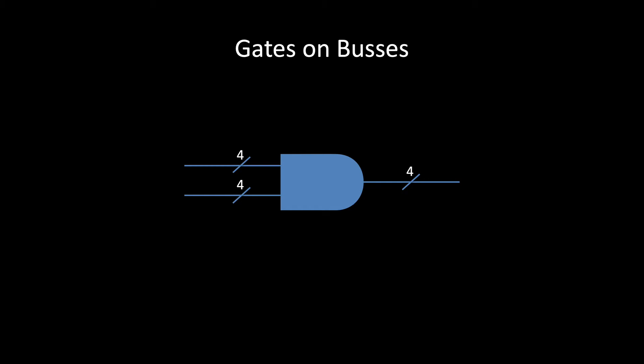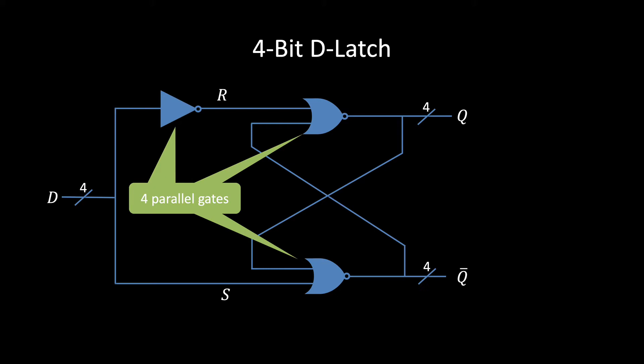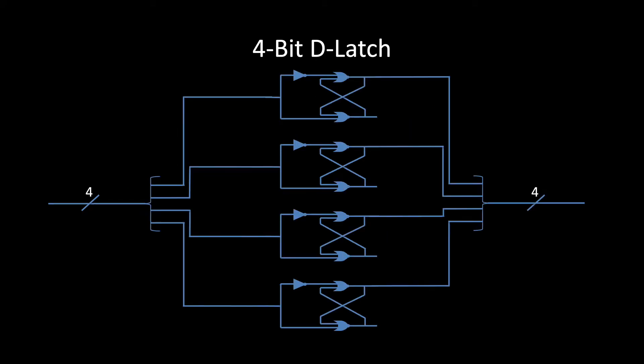Let's apply this same notation to the latches. As we saw in the last video, the feedback loop in this D latch can store one bit. However, we can connect it to a 4-bit bus when we want to store 4 bits. This notation represents 4 D latches working in parallel, each storing one bit. If we showed each latch separately, it would look like this.